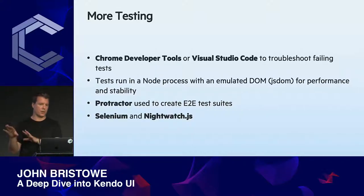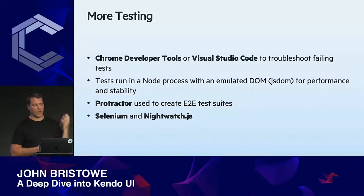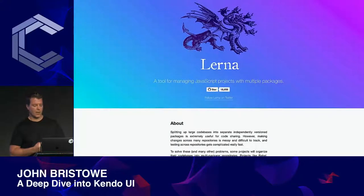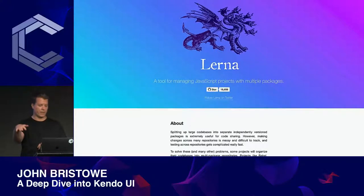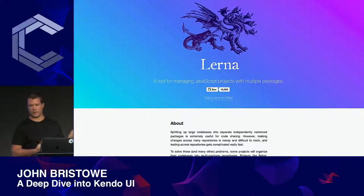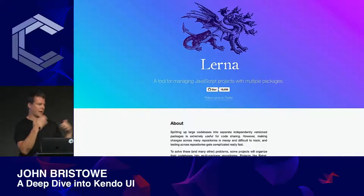If tests fail, we typically debug using Chrome DevTools or Visual Studio Code. These run within a separate Node process for performance and stability. Protractor is used for end-to-end test suites, along with Selenium and Nightwatch. Support for each library uses a Lerna monorepo, hosting components in separate packages within it. Lerna is a tool that optimizes your workflow around managing multi-package repositories with Git and NPM.